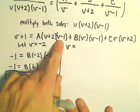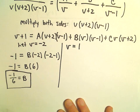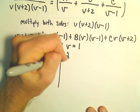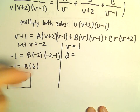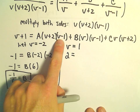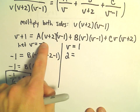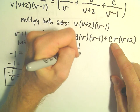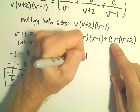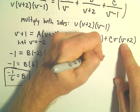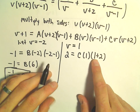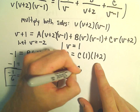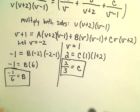Plugging in v = 1: the left side gives 1 + 1 = 2. The first and second terms vanish, leaving C·1·(1 + 2) = 3C. So 2 = 3C, giving c = 2/3.